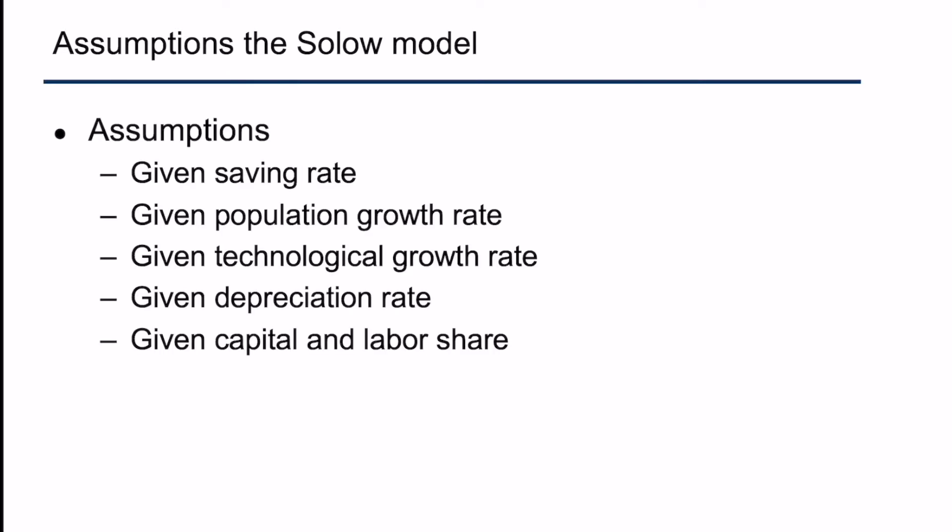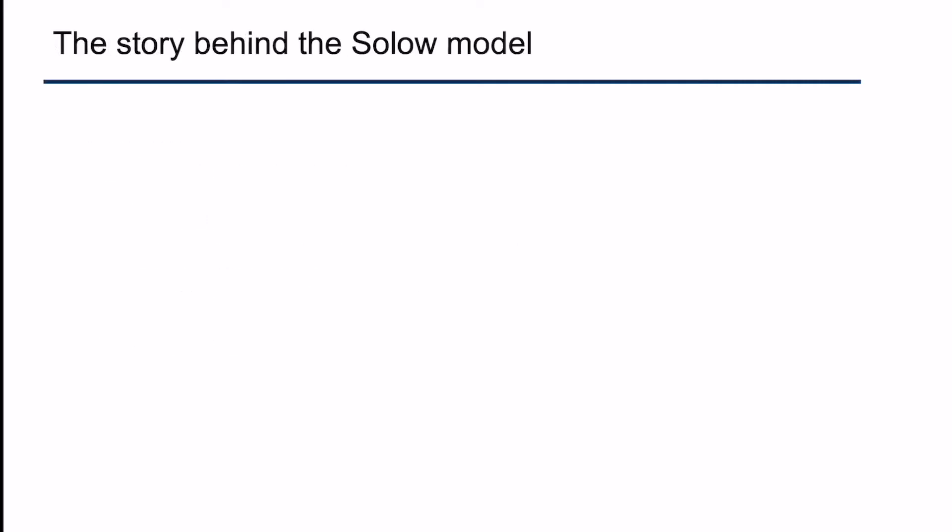Now let's move on to the assumptions of the Solow model. Under the Solow model, we are given several parameters: the saving rate, the population growth rate, the technological growth rate, the depreciation rate, and the capital and labor shares. Based on these assumptions, the story is that households and firms are agents in the economy, there are markets for different factor inputs and outputs, agents make decisions, markets attain equilibrium, and we assume there is no friction.